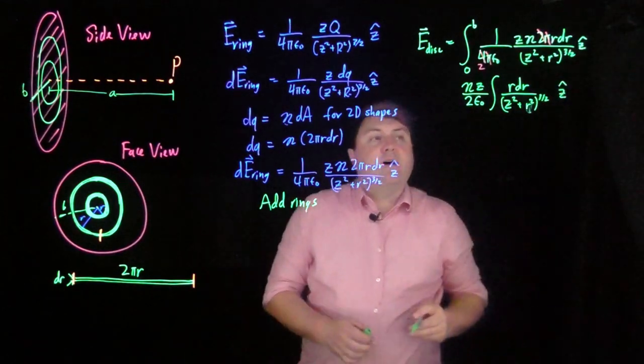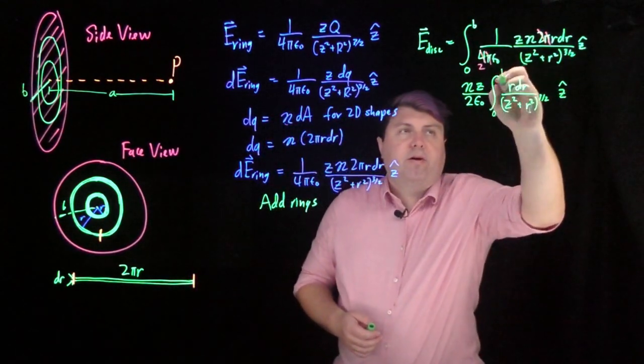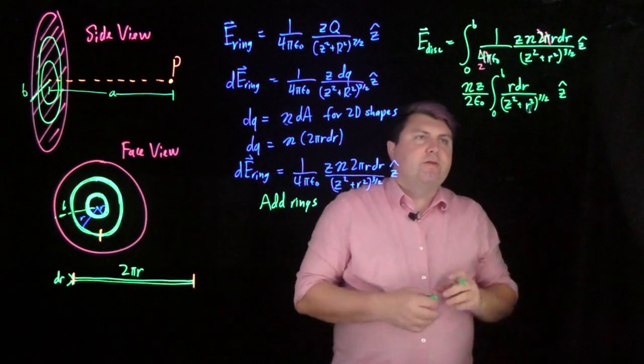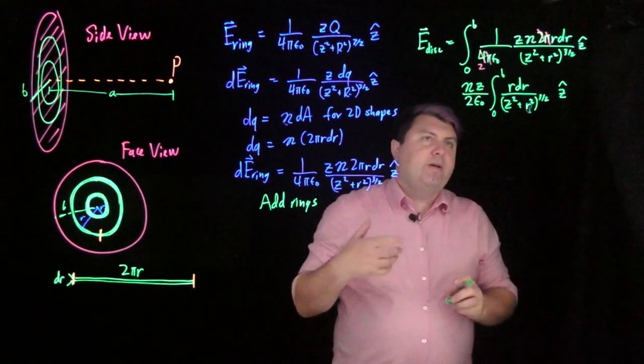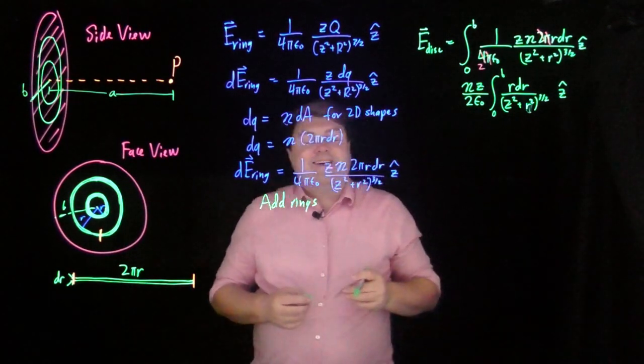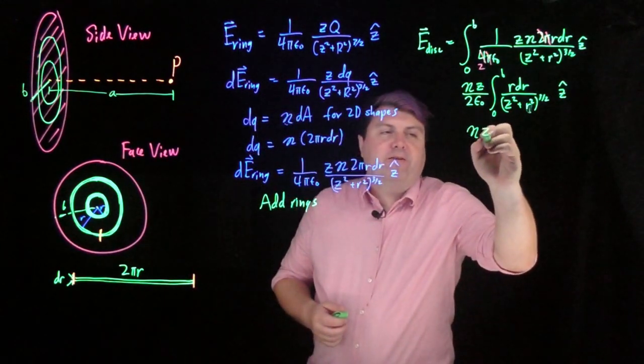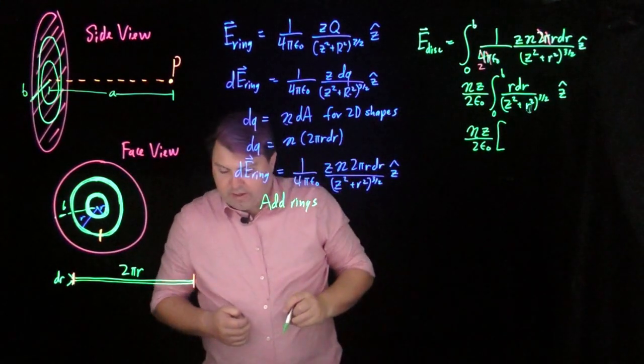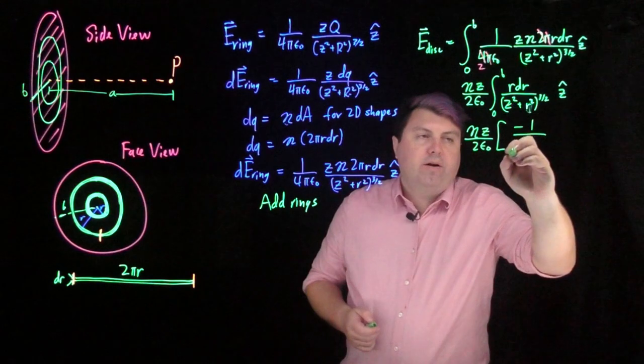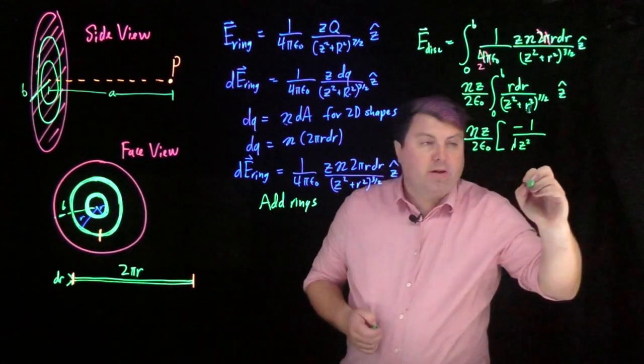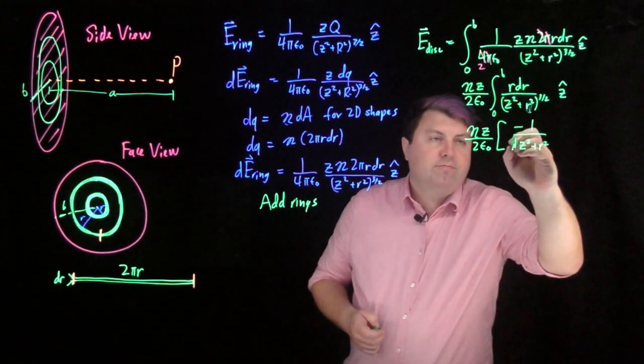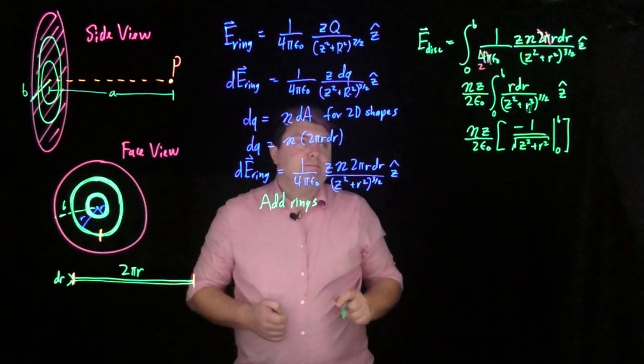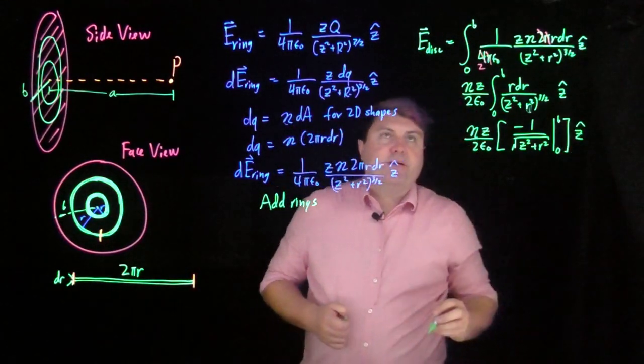My z hat is also constant, but we don't have to put it on a specific side. And then we can see that we could do a u equals u equals r squared, and then du would be 2 pi r or 2 r dr. Or we can just look it up in a table, and so we get the integral of this, eta z over 2 epsilon naught, is we get negative 1 over the square root of z squared plus r squared. And then we have to evaluate this from 0 to the radius b, still in this z hat direction.